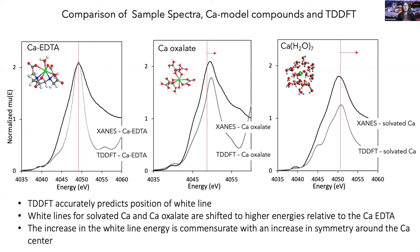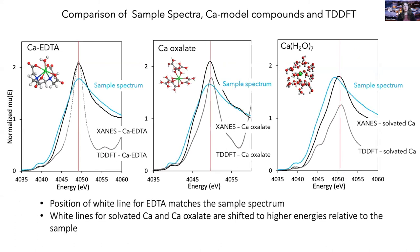Now we can overlay these model compounds with one of the sample spectra. What you can see is that the white line of the sample spectra aligns well with that of calcium-EDTA and is red-shifted relative to oxalate and solvated calcium, suggesting that something about calcium coordinated to EDTA is a better representation of that calcium coordination environment in organic matter than something like calcium oxalate.